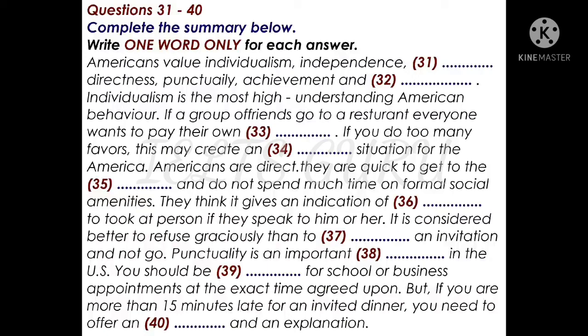Great value is attached to time in the US. Punctuality is considered an important attribute. In the US, you should be present for school or business appointments at the exact time agreed upon. In social appointments, you can arrive 10 to 15 minutes after the agreed upon time without giving offence. If you are invited somewhere for dinner and are more than 15 minutes late, you will need to offer an apology and an explanation. A phone call explaining you have been detained and will be late will save face for you and patience for the other person.